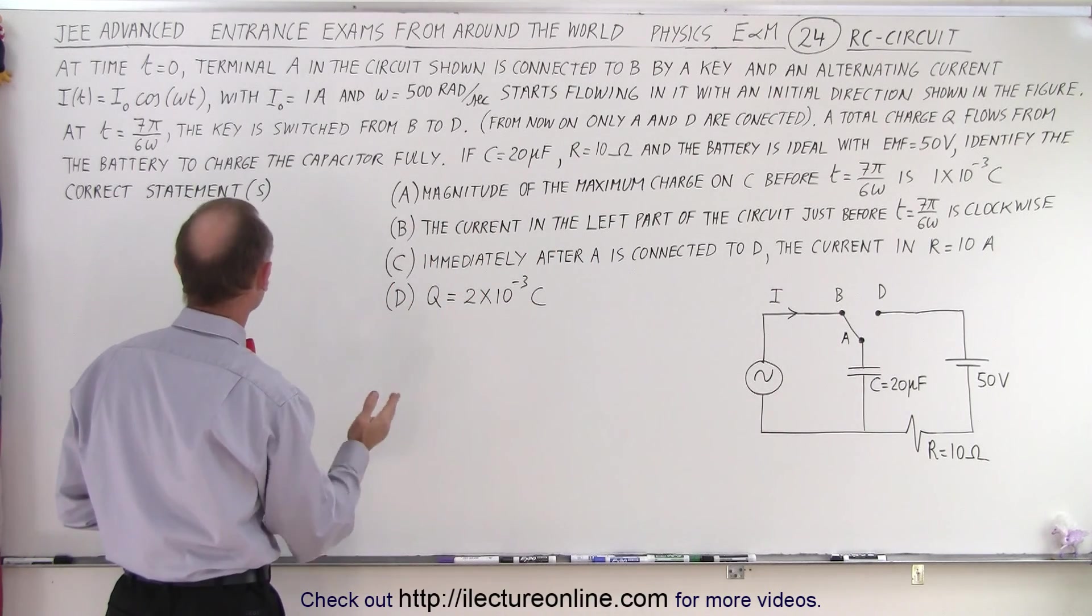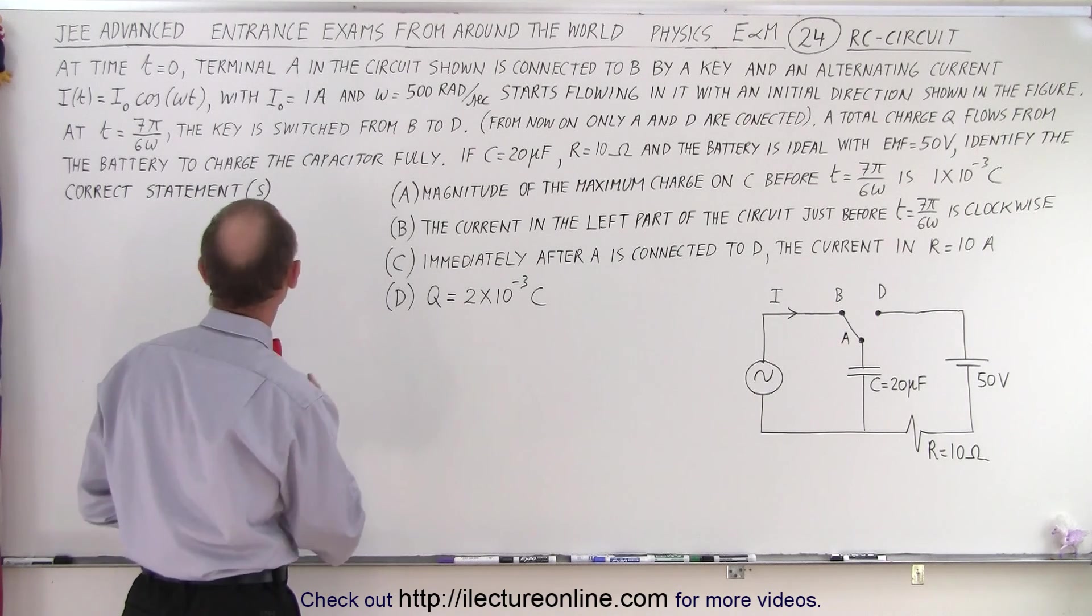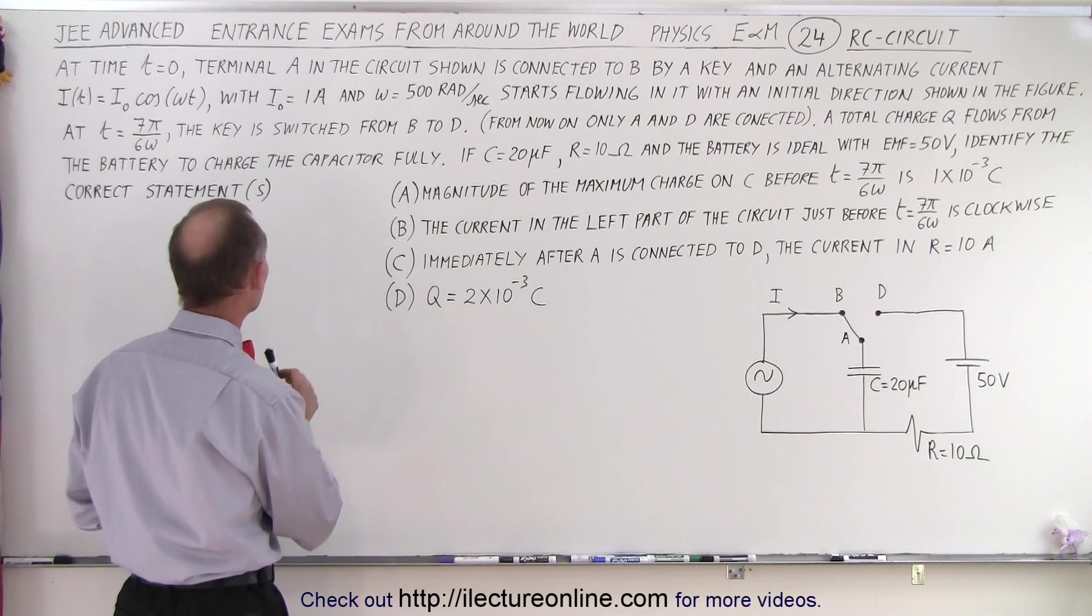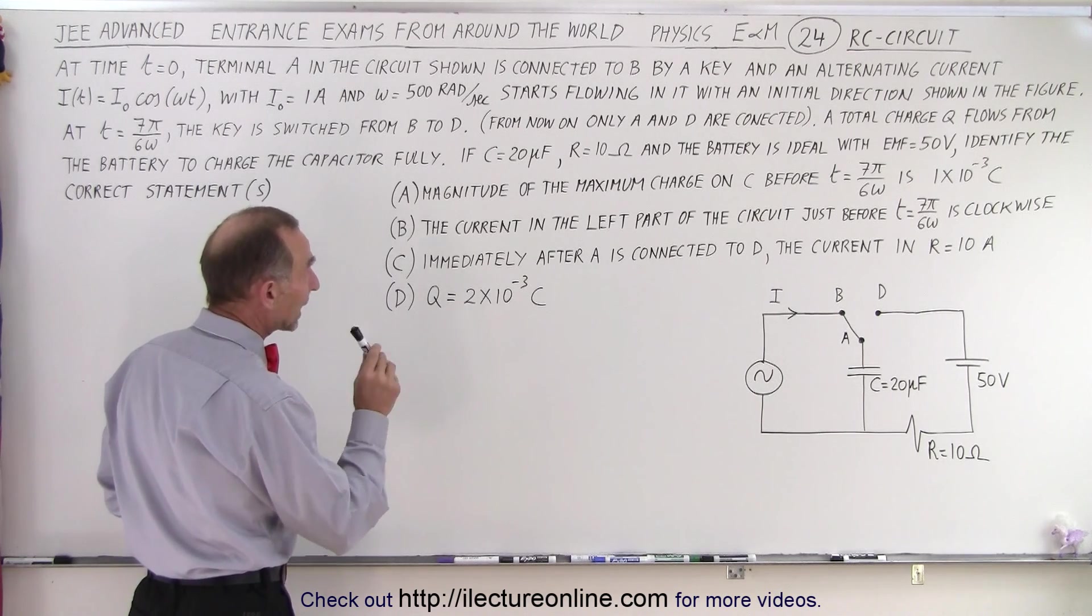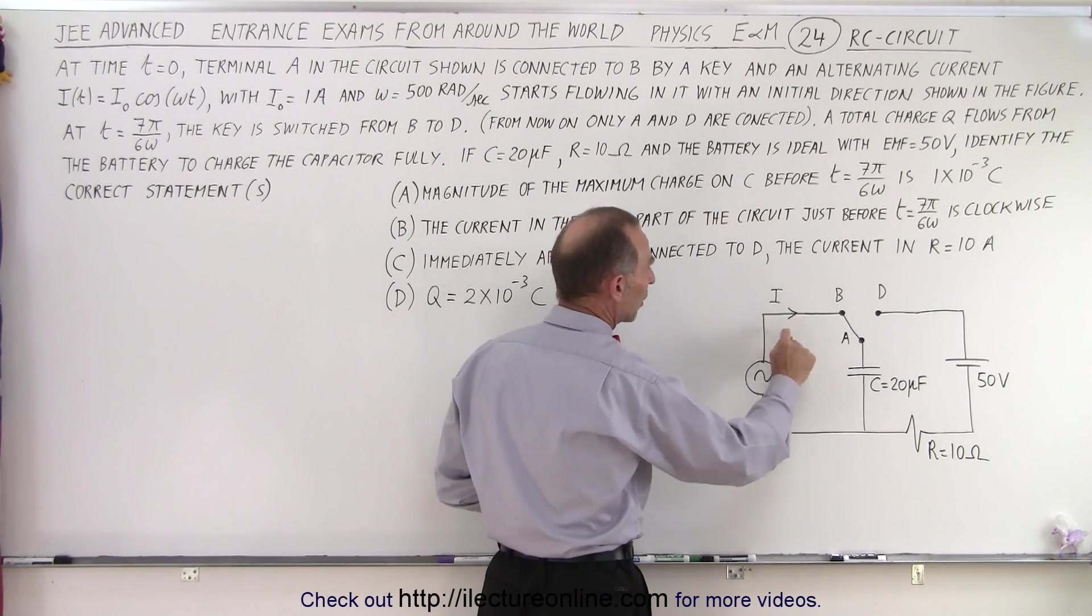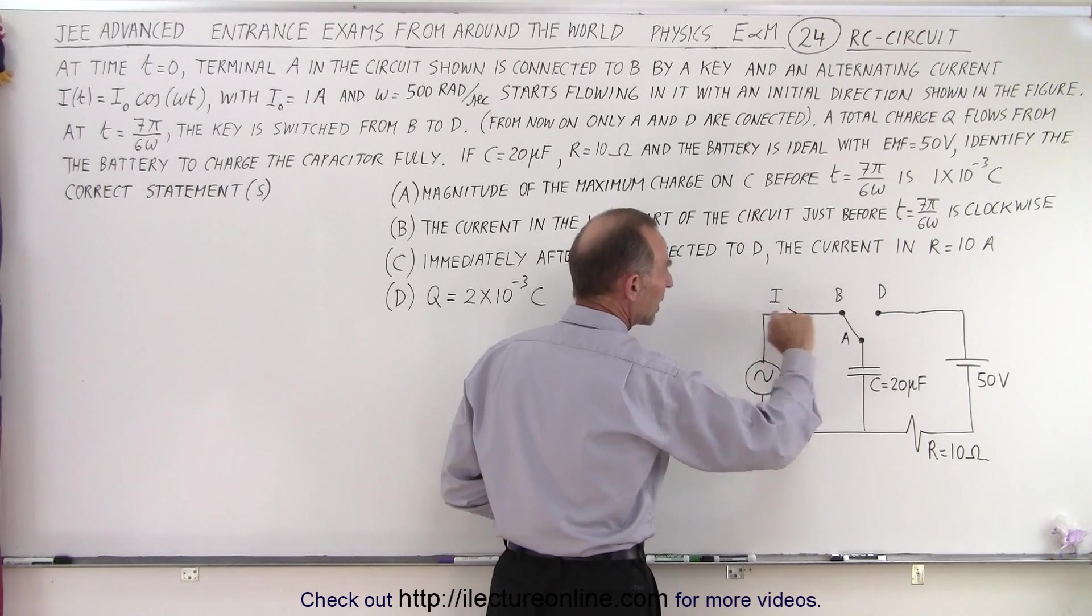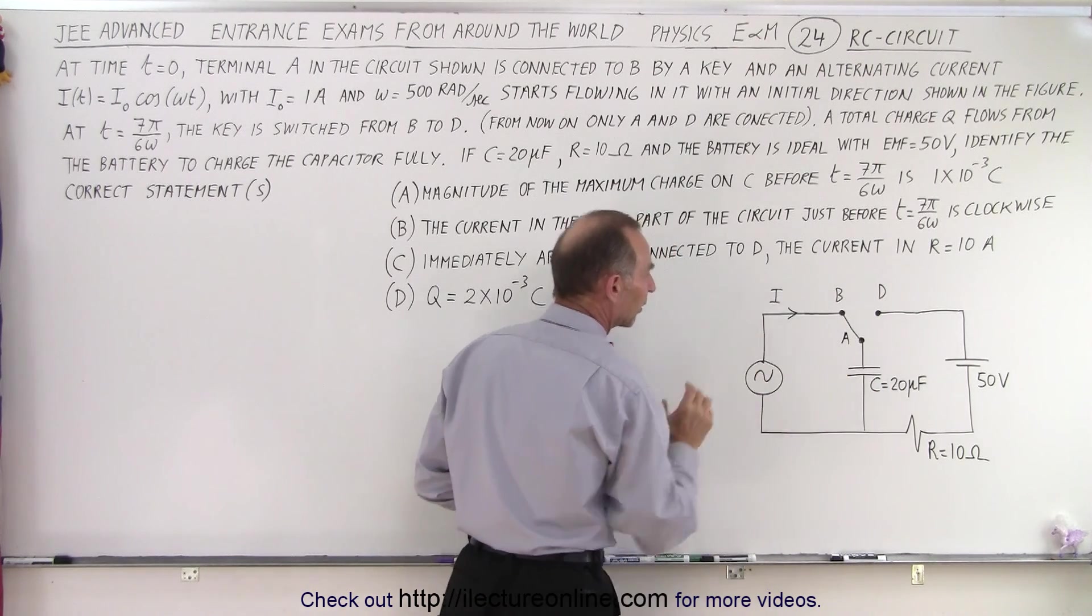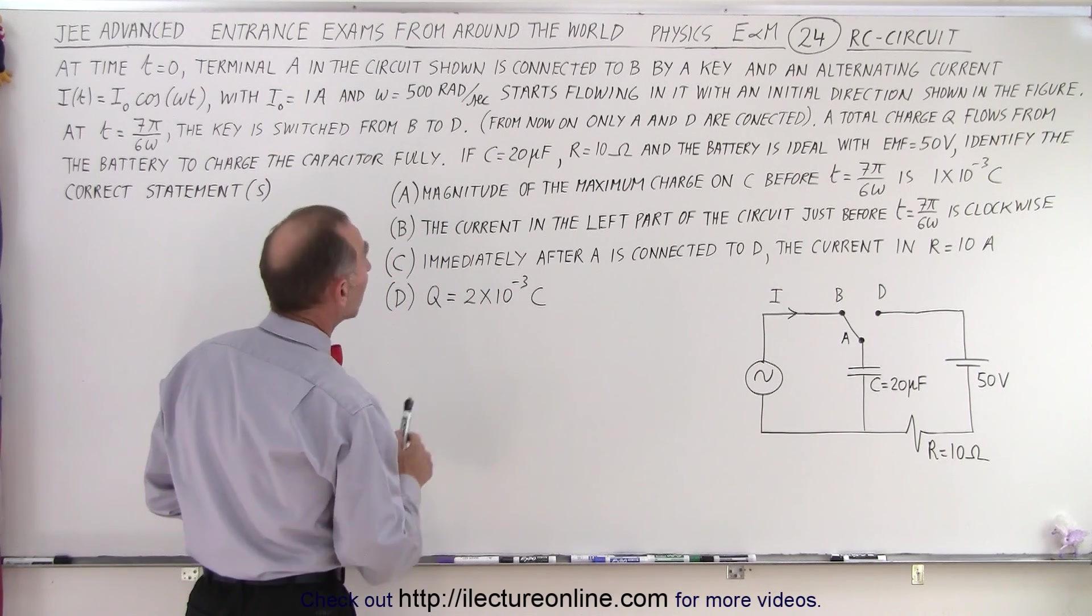At time t equals zero, terminal A in the circuit shown is connected to B by a key, and an alternating current, I equals I sub not times the cosine of omega t, with I sub not equal one amp, and omega being 500 radians per second. So the current starts flowing in it with an initial direction shown in the figure. At time equals zero, the switch goes from A to B, and that means that the capacitor will begin to be charged by this varying voltage supply.